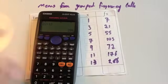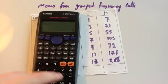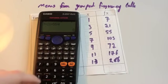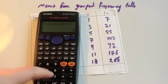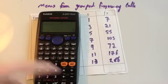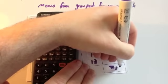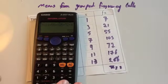7 plus 21 plus 55 plus 105 plus 72 plus 176 plus 286 equals 722. So 722 is the grand total.